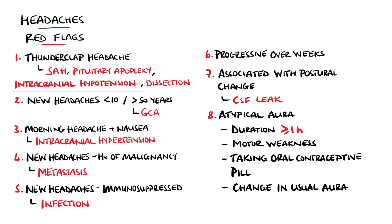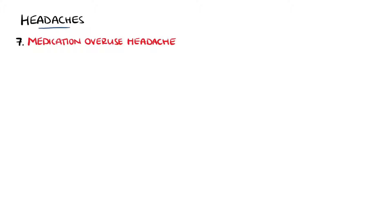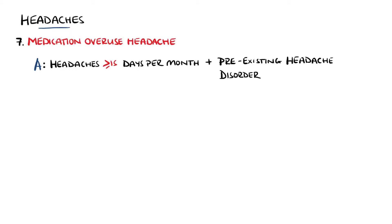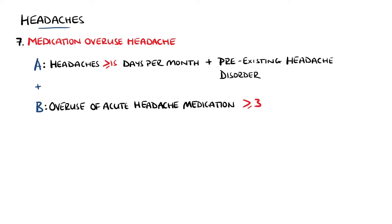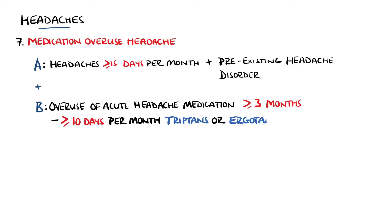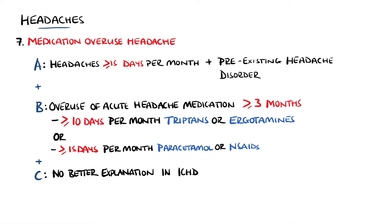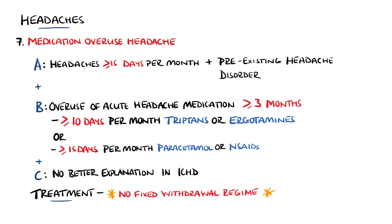Medication overuse headaches are a form of secondary headache, defined by the following criteria: headaches on 15 or more days per month and a pre-existing headache disorder. There must also be overuse of acute headache drugs for over three months, which is defined as 10 days a month for triptans or ergotamines, or 15 days a month for paracetamol or non-steroidal anti-inflammatories. There must also be no better explanation in the international classification of headache disorders. The treatment is varied — some patients will be able to stop their medications immediately, while some may stop gradually, while others may need admission as they withdraw medication. Overall, there is no fixed withdrawal regime.